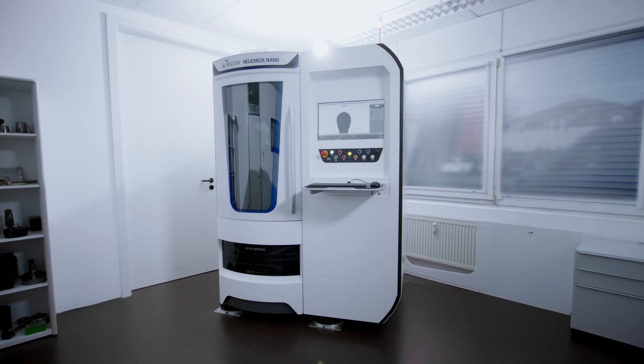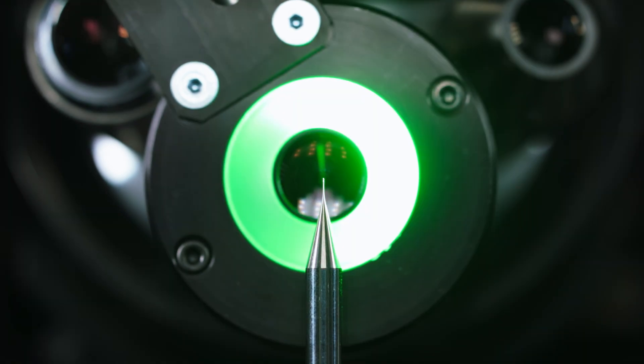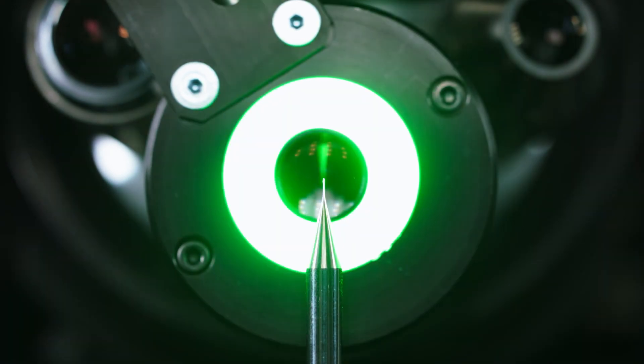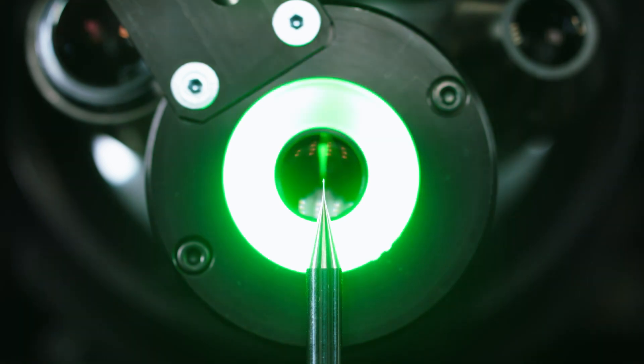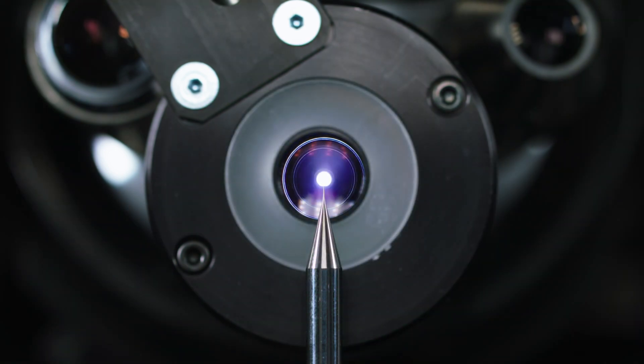With the Helichek Nano, we now offer a measuring machine that makes it possible to measure tools from a diameter of 0.1 millimeter in both backlight and incident light. Accordingly, all relevant tool parameters can be fully validated with this measuring machine, independent of the operator.